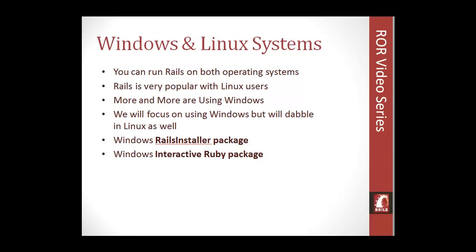A lot of Rails developers will not work on Windows because Ruby and Ruby on Rails initially ran on Linux and it used to be a lot easier to run Rails on Linux than Windows. But there has been a lot of developers now using Rails on Windows due to new kits that are available. One of those kits is the Windows Rails installer — it lets you install Rails on any Windows machine extremely easily, just like installing any software on your Windows machine.